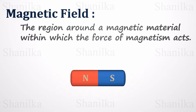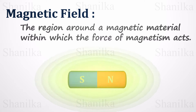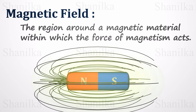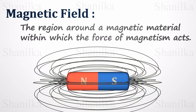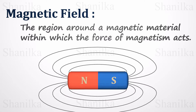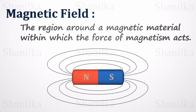Magnetic field is the region around a magnetic material within which the force of magnetism acts. A magnetic field is represented by a series of lines around a magnet. The direction of magnetic field lines is always from the north pole to the south pole, shown using arrowheads.